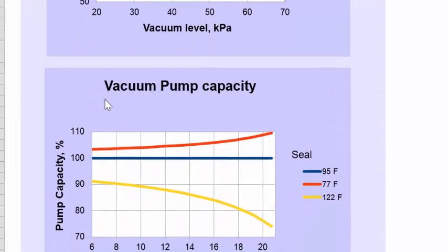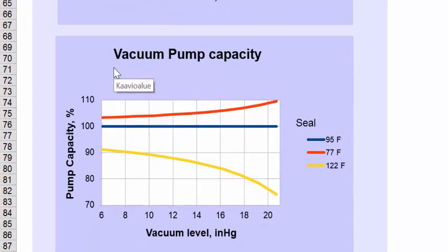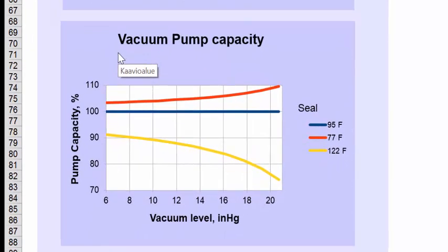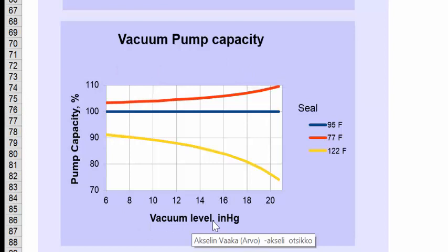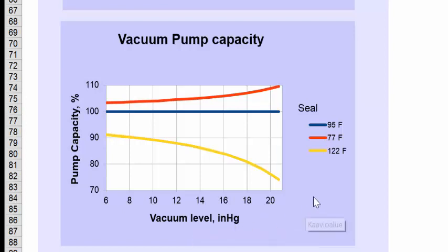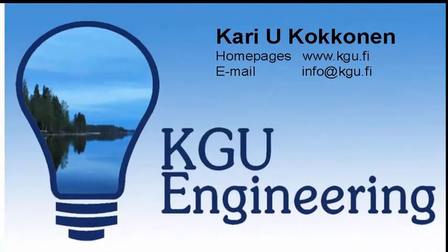At the second picture below, we can see exactly the same results, with the only difference that now the vacuum is indicated in inches of vacuum instead of kilopascals, and the seal water temperature is shown in Fahrenheit. Thank you for your interest.